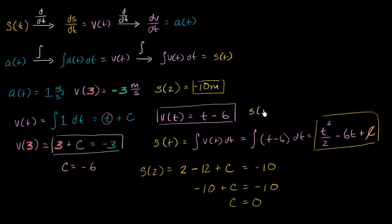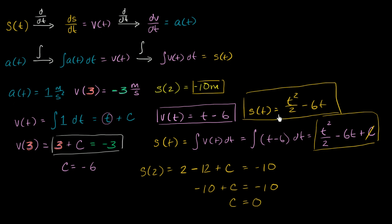Our position as a function of time is equal to t squared over two minus 6t. You can verify: when t equals two, two squared over two is two, minus 12 is negative 10. You take the derivative here, you get t minus six. We already verified that v(3) is negative three. And you take the derivative there, you get a(t) just like that.